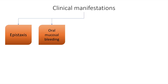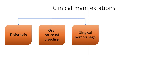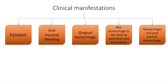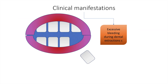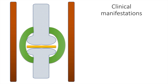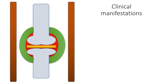The clinical manifestations of bleeding disorders include epistaxis, oral mucosal bleeding, gingival hemorrhage, skin hemorrhage in the form of petechiae and ecchymosis, and menorrhagia and postpartum hemorrhage. A patient may also have excessive bleeding during dental extractions or during surgical procedures, which should herald a search for a bleeding disorder. Spontaneous joint bleeds can be the presenting manifestation of hemophilia.